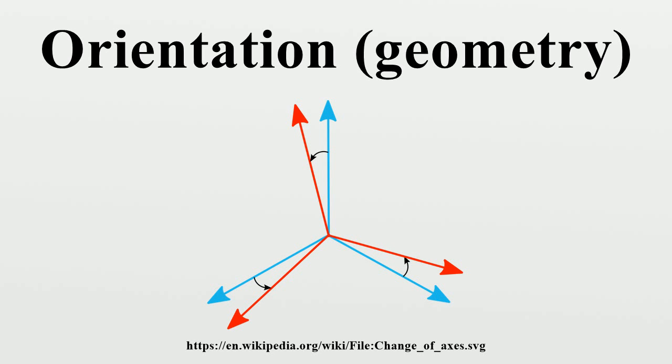Namely, it is the imaginary rotation that is needed to move the object from a reference placement to its current placement. A rotation may not be enough to reach the current placement. It may be necessary to add an imaginary translation, called the object's location.